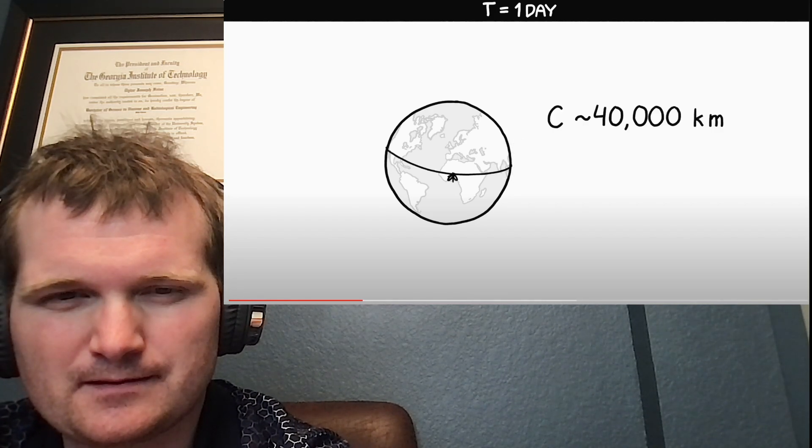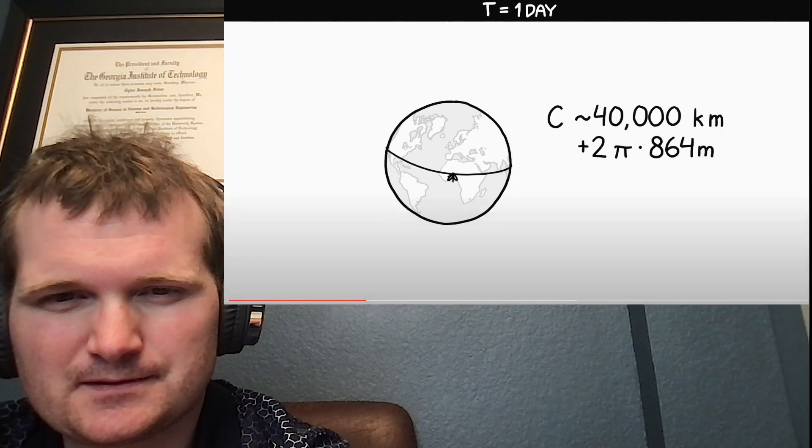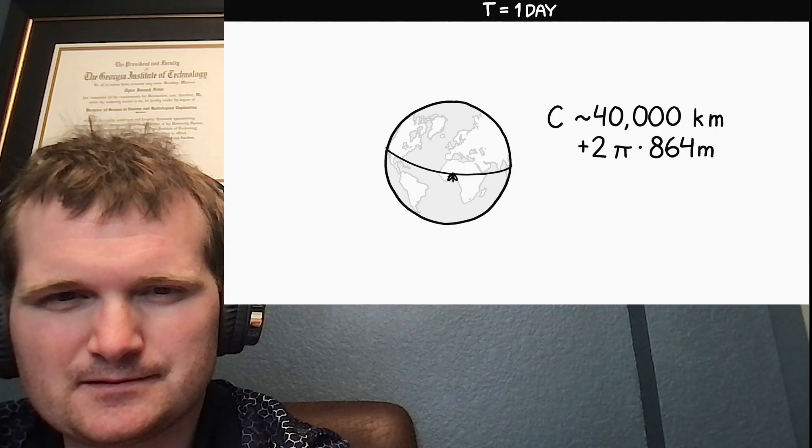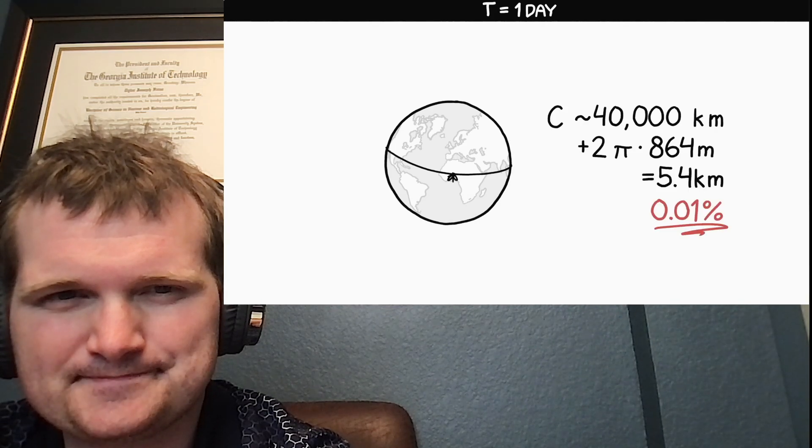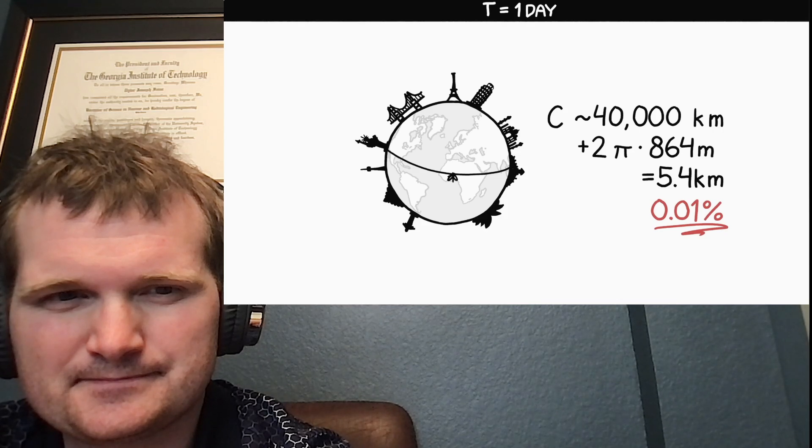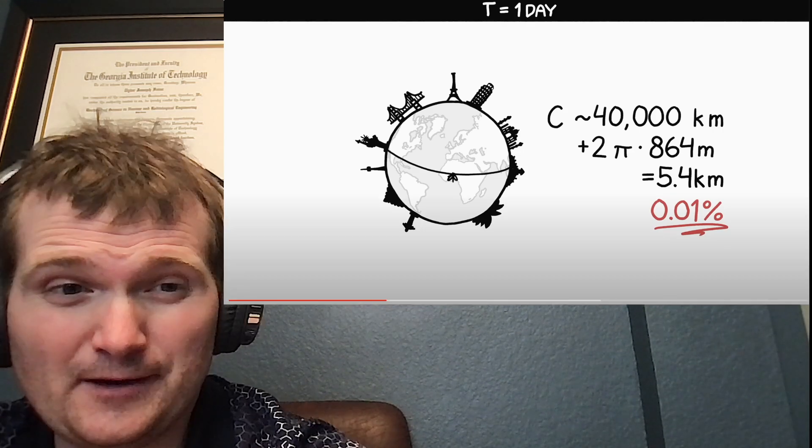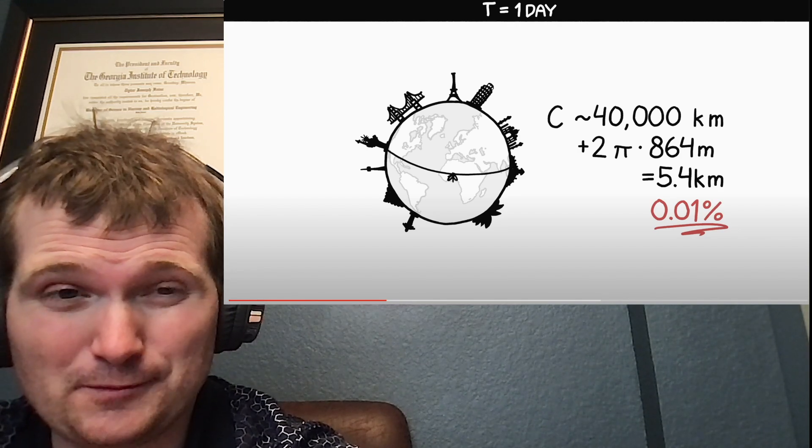One day, the 40,000 kilometer circumference of the Earth would increase by two pi times 864 meters, or 5.4 kilometers, which is about 0.01 percent. And that'd be handled easily by virtually all structures. Concrete expansion attracts by more than that every day.